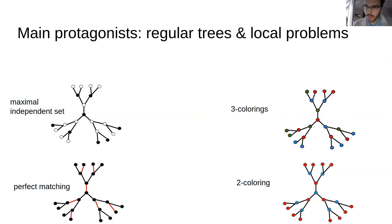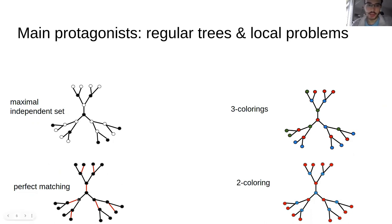Now let me tell you about the problems we are going to consider — so-called local problems. Maximal independent set is a problem where you color some nodes black so that the black nodes are not neighboring and every white node has at least one black neighbor. Another example, which will be the running example, is perfect matching, where we select some edges so that every vertex is matched to a unique neighbor. And proper coloring is another example. In general, a local problem is any problem where you can check the solution locally.